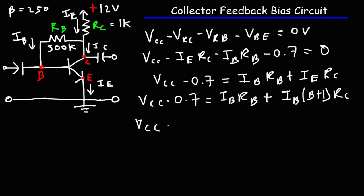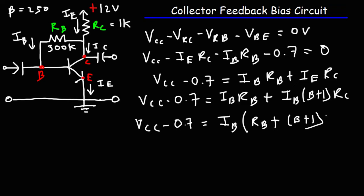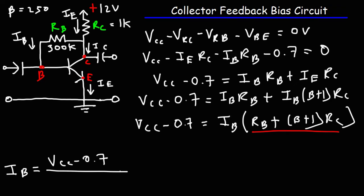Factoring out IB on the right side gives RB plus beta plus 1 times RC. Dividing both sides by that term yields the final equation: IB equals VCC minus 0.7, divided by RB plus beta plus 1 times RC.